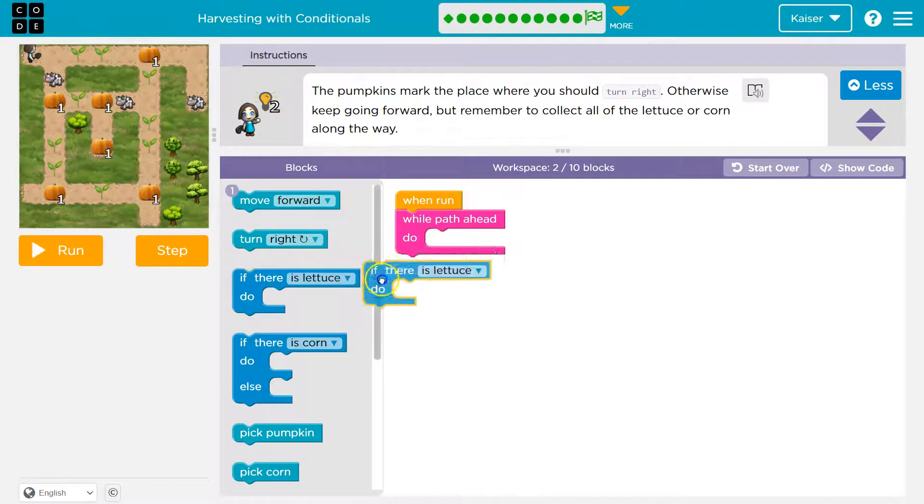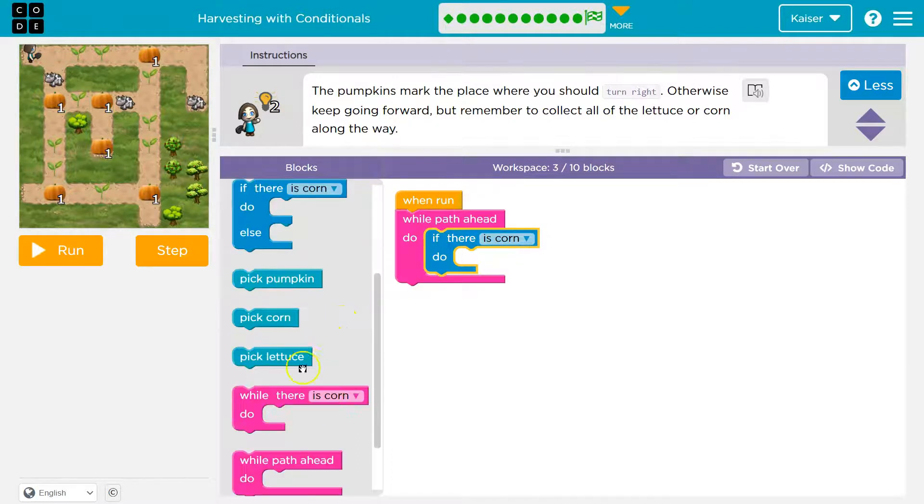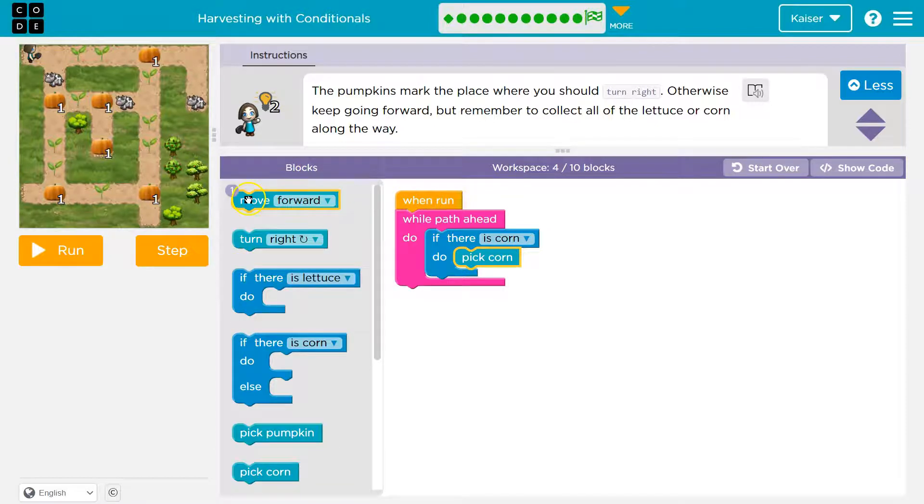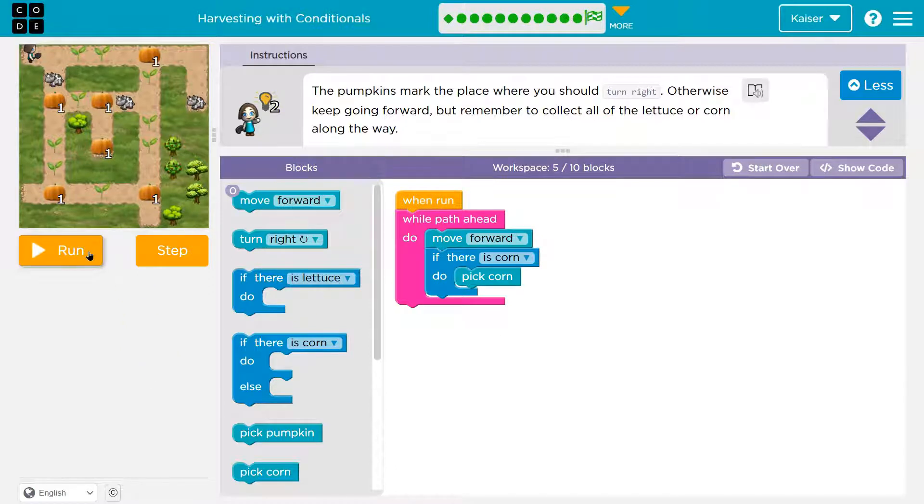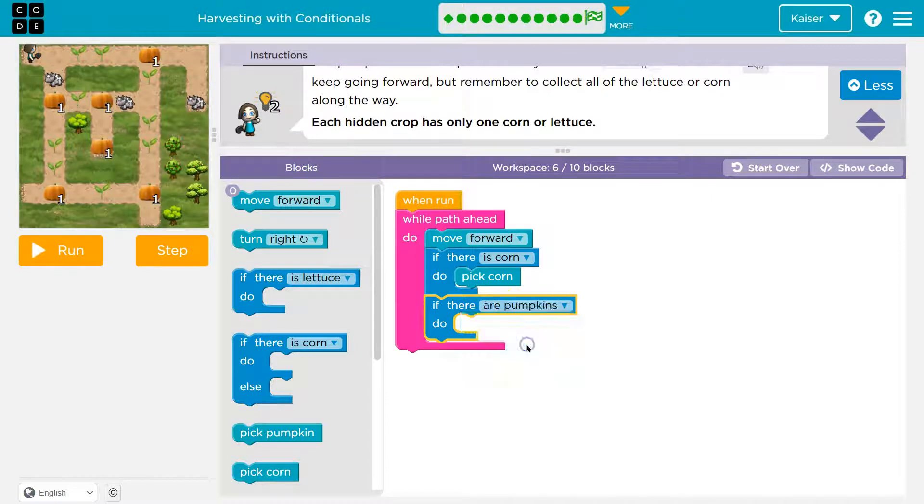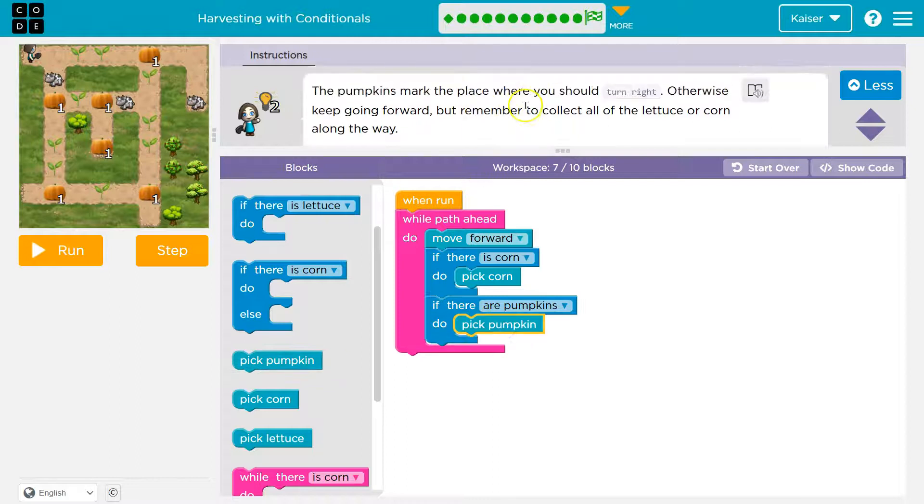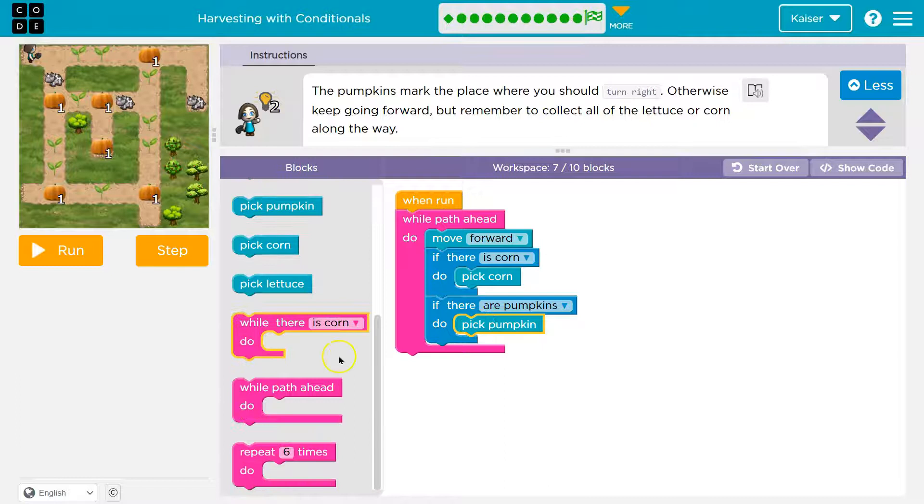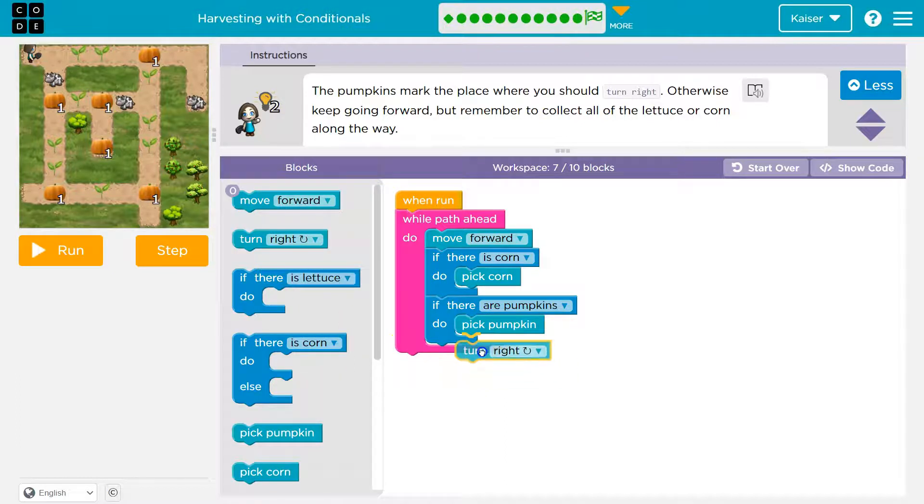While there's path ahead, right? Because we don't know how long it will be. What do I want to do? Well, I need to get this. And I know this is corn, because I know. If there is corn, what should we do? I think we're going to pick it, right? And then what? Let's go ahead. Maybe I can... So I know there's no corn on this first one, so I'm going to move forward. If there's corn, I'm going to pick the corn. Then I'll keep moving forward, and now I should stop when I get to this pumpkin.